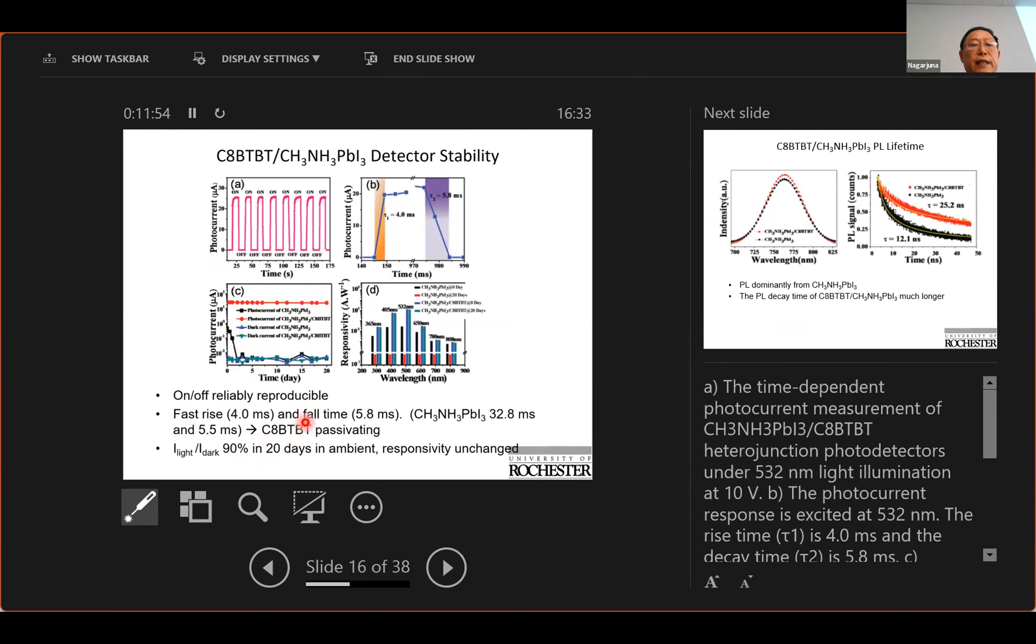The rise time for the CABTBT modified devices increases fast, decays fast compared with that without. And without it it will rise about almost eight times slower and the light and dark current ratio will remain 90 percent in 20 days in ambient.